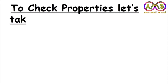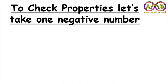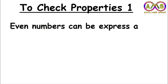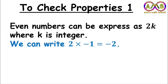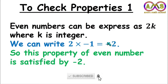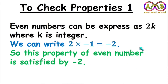To check the properties of even numbers, let's take one negative number, that is minus 2. Property 1: an even number can be expressed as 2k, where k is an integer. So we can write minus 2 as 2 times minus 1, which equals minus 2. Here, minus 1 is the value of k, which is an integer. So this property is satisfied by minus 2, and we can say minus 2 is an even number.